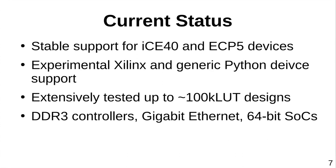In terms of scalability, NextPNR has been extensively tested on designs of around the 100,000 LUT order of magnitude — the biggest ECP5 is about 80,000 LUTs. We've also done testing to make sure the core algorithms scale on Xilinx devices up to about the 100,000 LUT mark. That already gets you pretty complex designs: DDR3 memory controllers, gigabit Ethernet controllers, 64-bit system-on-chip. You can put a 64-bit RISC-V core, DDR3 memory, and gigabit Ethernet on a big ECP5 and run Linux on it.